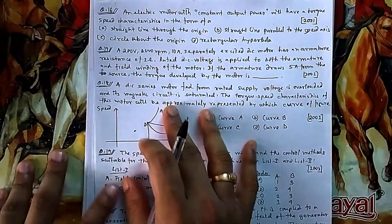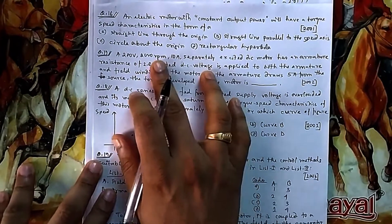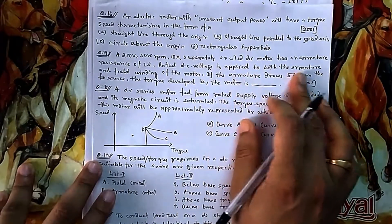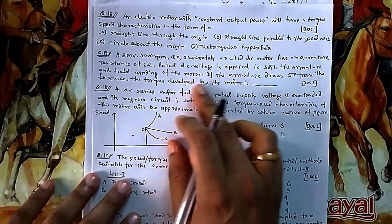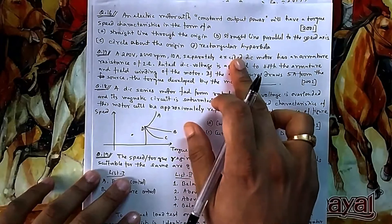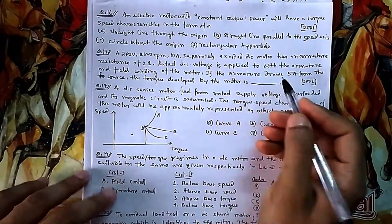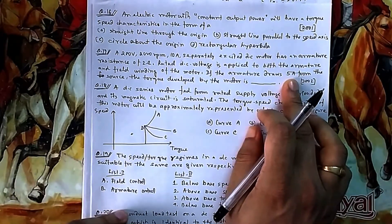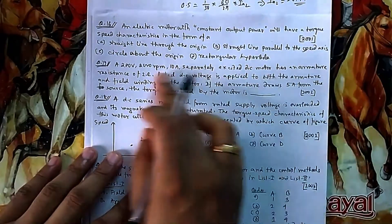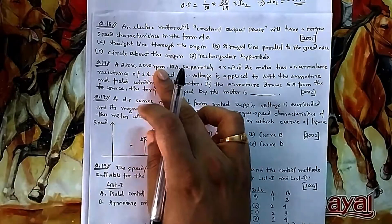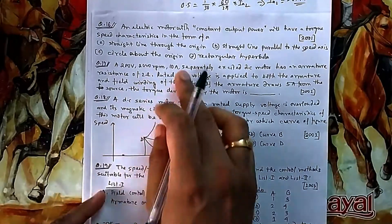For question 17: a 200 volt, 2000 rpm, 10 ampere separately excited DC motor has an armature resistance. The rated DC voltage is applied to both the armature and field winding of the motor. If the armature draws 5 ampere from the source, what is the torque developed by the motor? Since it is separately excited, phi is constant, so torque is directly proportional to armature current Ia.